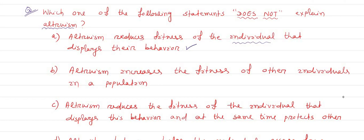Option B: Altruism increases the fitness of other individuals in a population. By showing this behavior, the individual increases the fitness of other individuals in the population so that the population can grow at the cost of one individual's life.